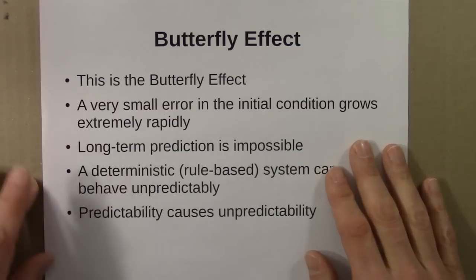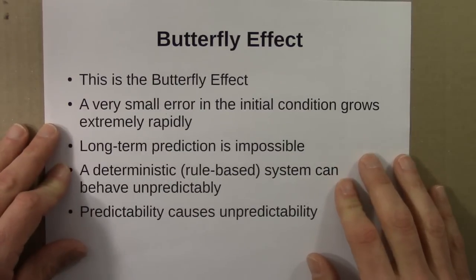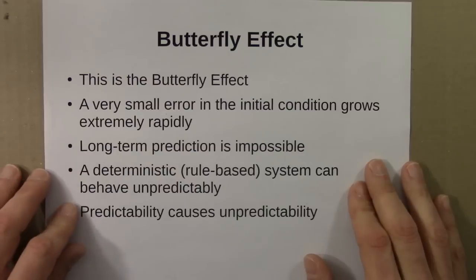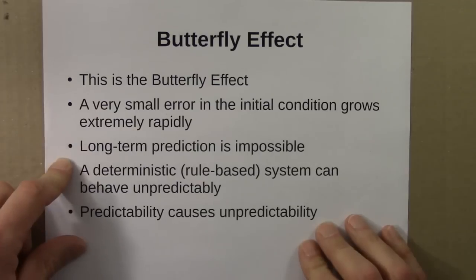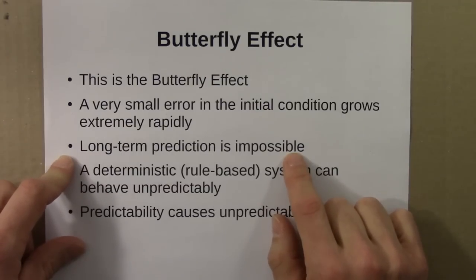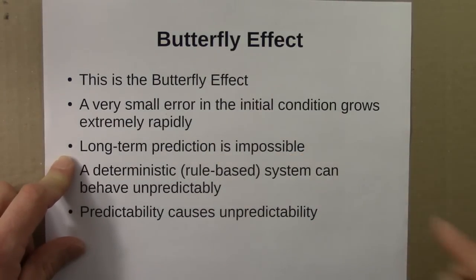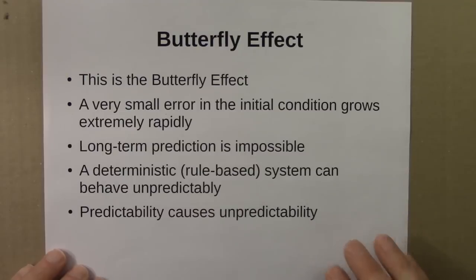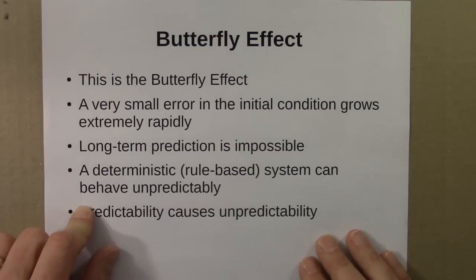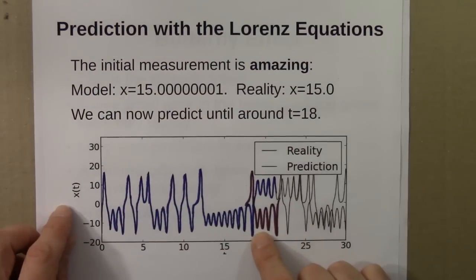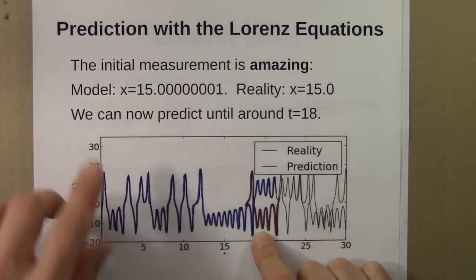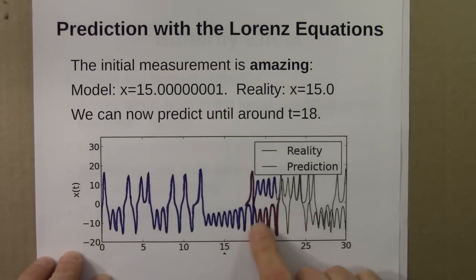To summarize this portion of the lecture, this is an example of the butterfly effect. A very small error in the initial condition grows extremely rapidly. That means that long-term prediction is impossible. The butterfly effect will eventually win. All small errors are magnified. They're going to grow. What we have here is a deterministic, i.e. a rule-based system, that's behaving unpredictably. Once we get out past a region of predictability, even though we have a deterministic system, it behaves as if it's unpredictable.